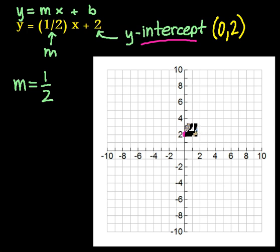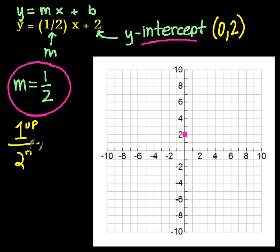The next step is to use that slope, in this case it's one over two, which we can interpret as up one for every two that I go to the right.